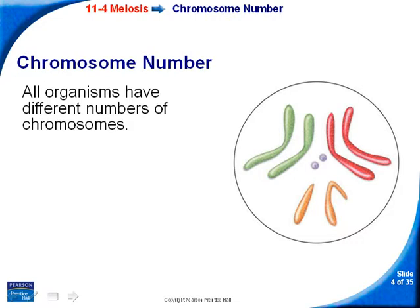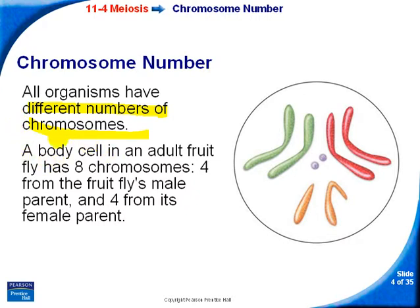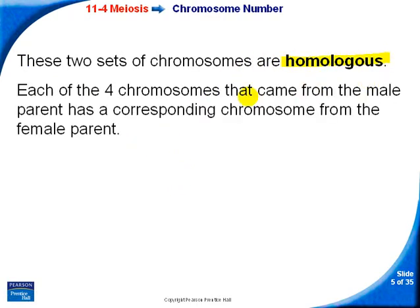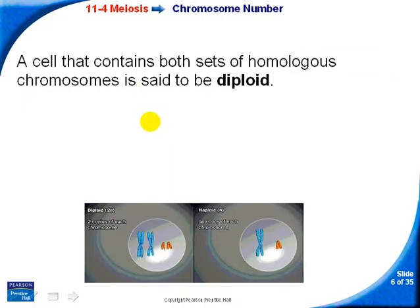To explain this further, let's look at chromosome numbers. All organisms have different numbers of chromosomes. For example, a fruit fly has eight chromosomes and gets four from the male parent and four from the female parent — just like you get some of your chromosomes from your mother and some from your father. These two sets of chromosomes are homologous, meaning they're corresponding chromosomes, so each of the four chromosomes from the male parent has a corresponding chromosome from the female parent.